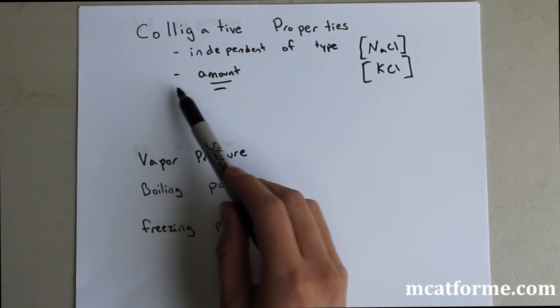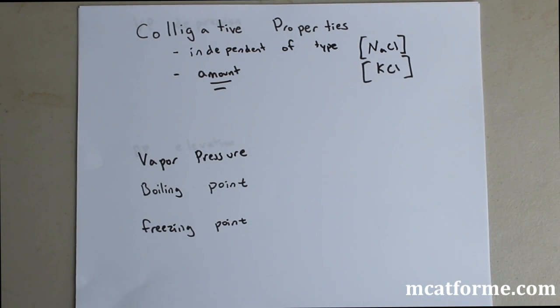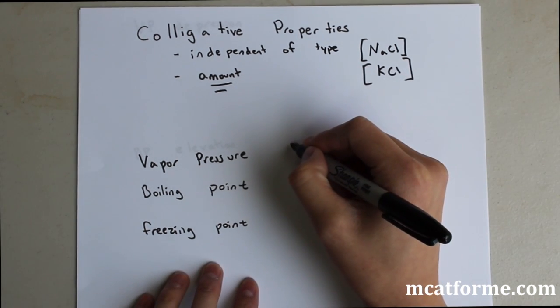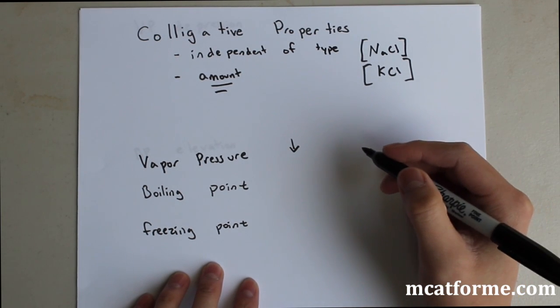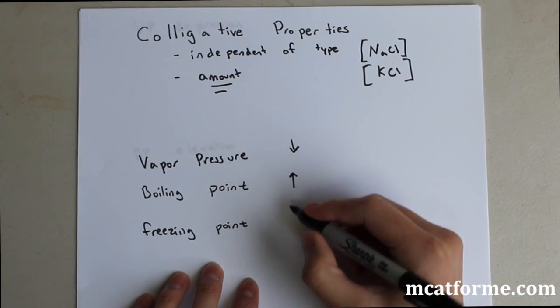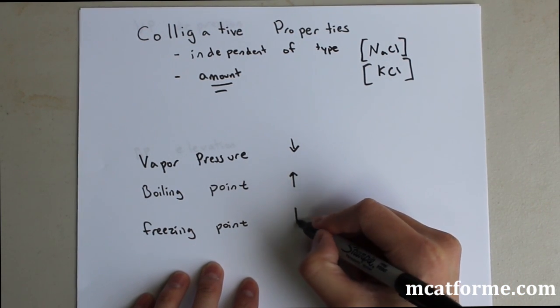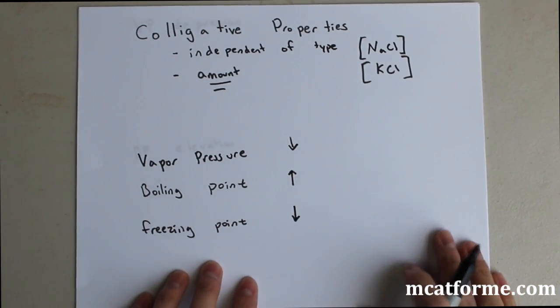It's specific only to the amount or concentration of these particles. The three that we're going to be looking at are vapor pressure, boiling point, and freezing point. We should just memorize right now: vapor pressure depression, boiling point elevation, and freezing point depression. That will come in handy later.